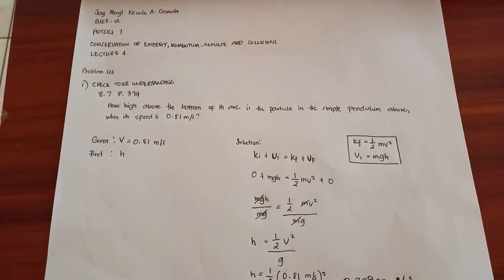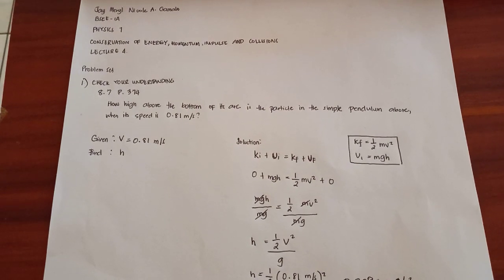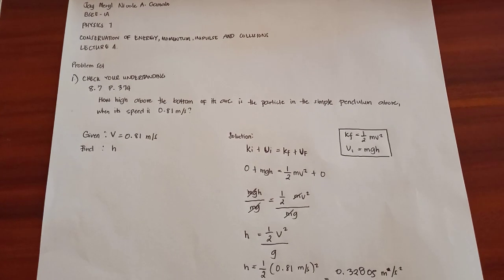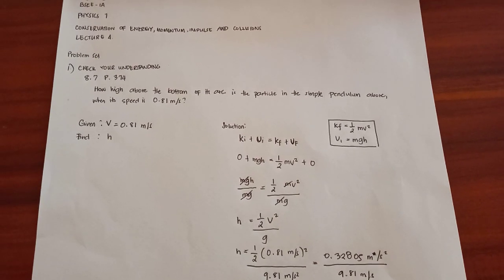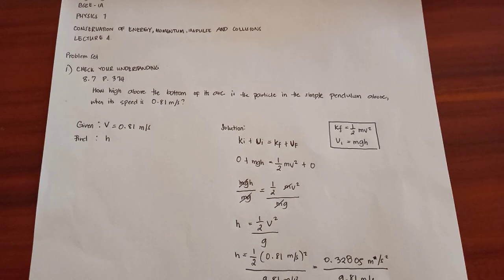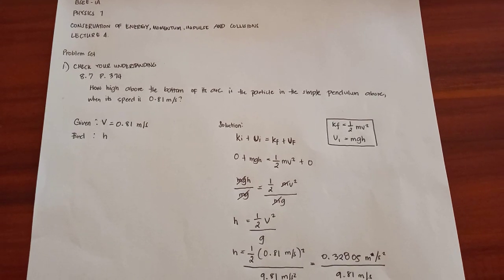So problem set number 1 and check your understanding 8.7 on page 374. So how high above the bottom of its arc is the particle in the pendulum above when its speed is 0.81 meters per second?